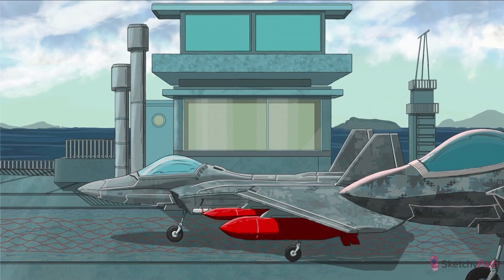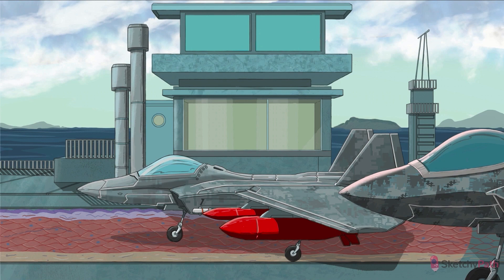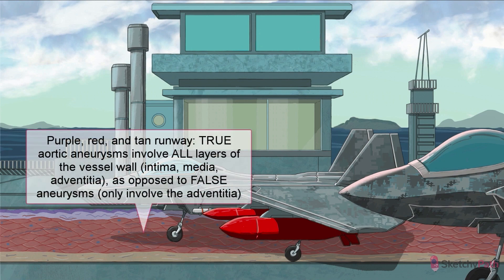Another distinction to keep in mind is true versus false aneurysm. True aneurysms contain all layers of the vascular wall: the intima, media, and adventitia, also called the externa, as depicted by the markings on the landing strip. Purple for intima, red for the smooth muscle of media, and tan for adventitia.